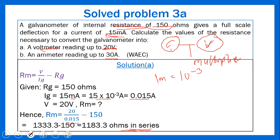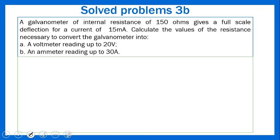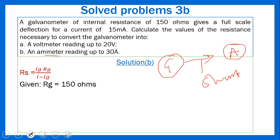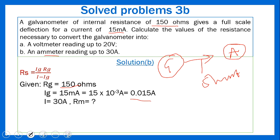For part (b), we need to convert the galvanometer to an ammeter, so we use a shunt. The shunt formula is: RS = (IG × RG) / (I − IG). Parameters: RG = 150 ohms; IG = 15 milliampere = 0.015 ampere; I = 30 milliampere = 0.030 ampere. Substituting: RS = (0.015 × 150) / (0.030 − 0.015).